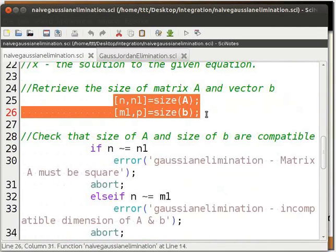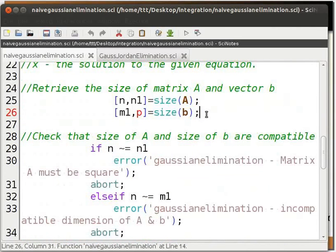Since they are two dimensional matrices, we use n and n1 to store the size of matrix a. Similarly, we can use m1 and p for matrix b.